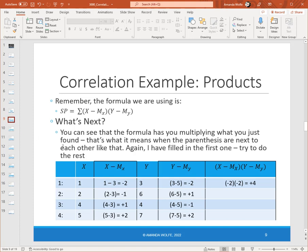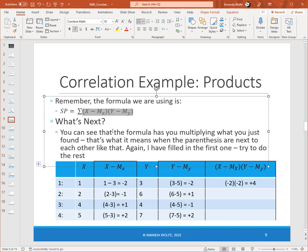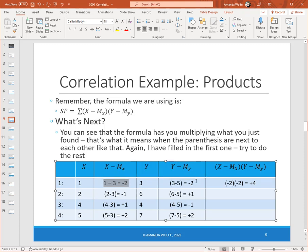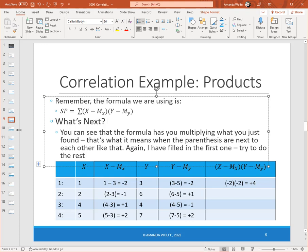Next up, the next step is, as you can see, we've added another column to our table. And that's because the formula here is the summation of those two things we just found multiplied. So it's X minus the mean of X times Y minus the mean of Y. It's those two things multiplied, and then we're going to add them all together. So that would mean we would take the answer for participant number one, which is negative two, times their answer in the Y column, which is negative two. And negative two times negative two is positive four. So signs do matter here, because you're going to be adding these together. And a negative times a negative is positive, and a negative times a positive is negative, and two positives is a positive. So signs matter. I'd like you to pause the video, try to fill out the remaining three columns here, and then you can start the video back and check your answers.